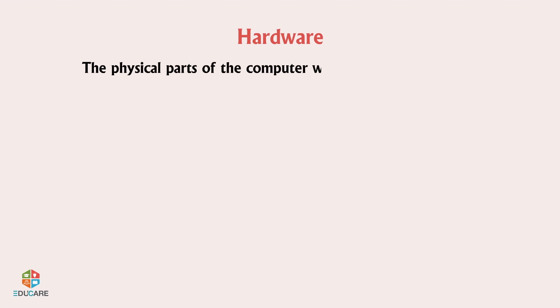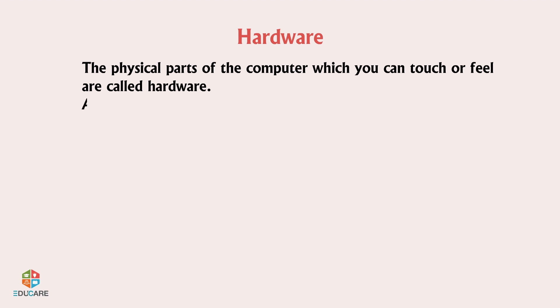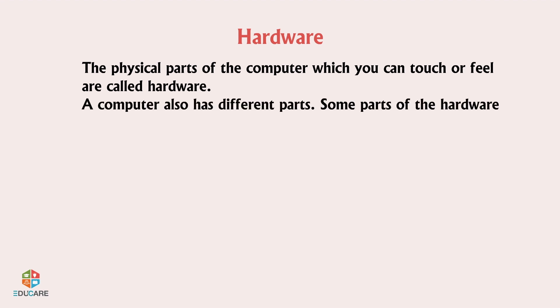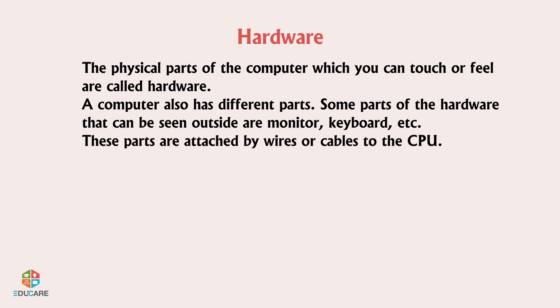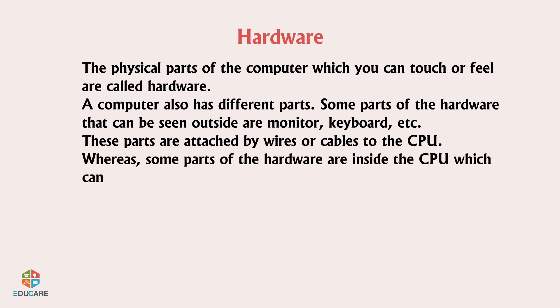Hardware: The physical parts of the computer which you can touch or feel are called hardware. A computer also has different parts. Some parts of the hardware that can be seen outside are monitor, keyboard, etc. These parts are attached by wires or cables to the CPU. Whereas some parts of the hardware are inside the CPU, which can be seen only on opening the CPU.